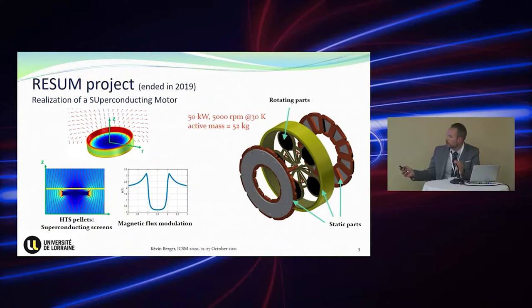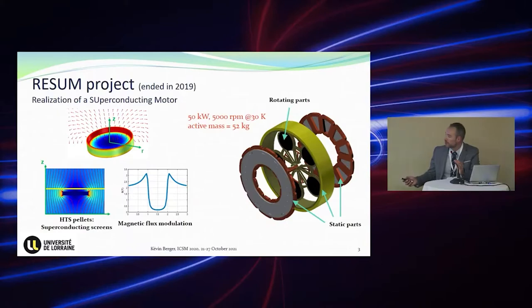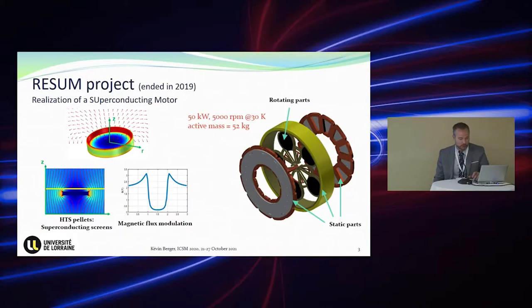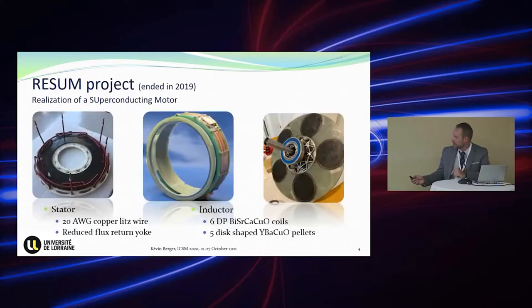The machine is composed of two main parts. There is the HTS coil, made at the time of BSCCO tape, which is the fixed part. This BSCCO coil is used to create a background field up to several Tesla. In this background field, we place some bulk — at that time YBCO — and the main role of the bulk is to screen the magnetic flux density so that we can obtain a modulation of the flux. This modulation is sensed on the stator side, which is a conventional copper winding, to create the back-EMF used for the machine.